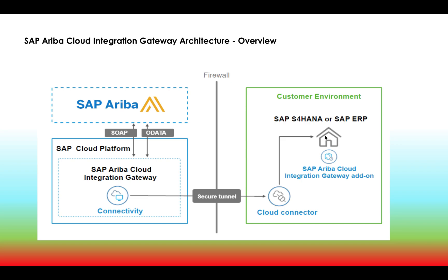To connect SAP S/4HANA or SAP ERP to SAP Ariba Cloud Integration Gateway, the customer first needs to install the SAP Ariba Cloud Integration Gateway add-on in their SAP system.